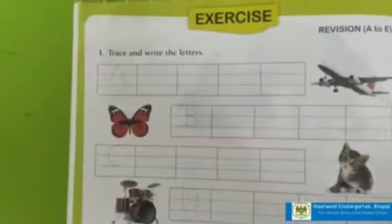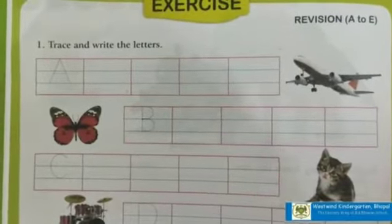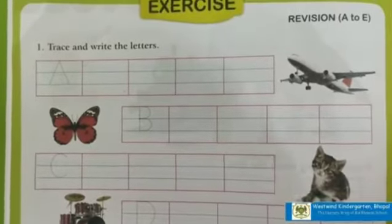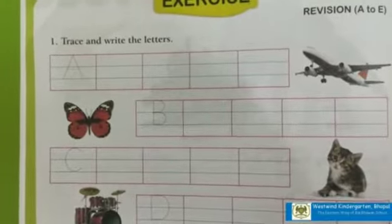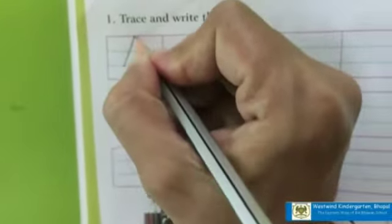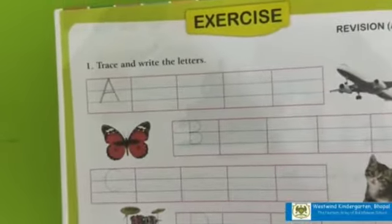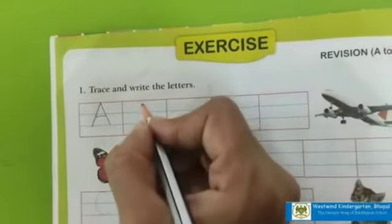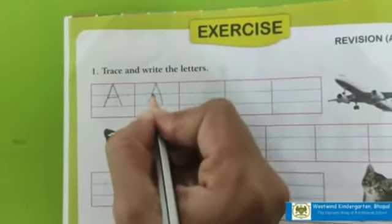First, which letter is this? A. And the sound of letter A is 'A'. You know what you have to do? You have to trace the letter like this. And then you have to write the letter A in this line. Very good.